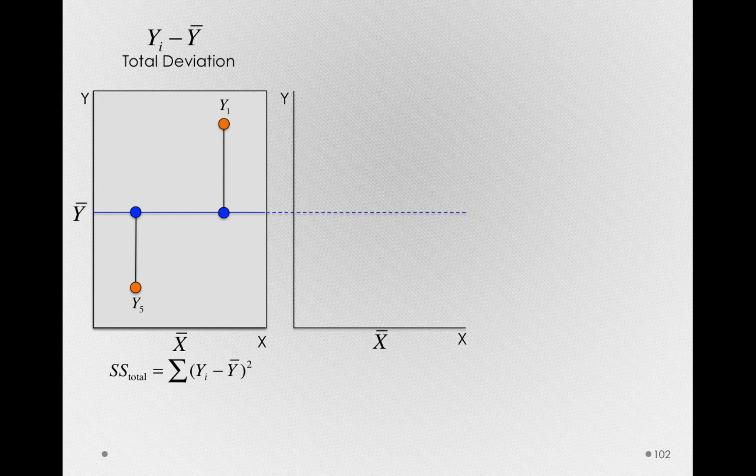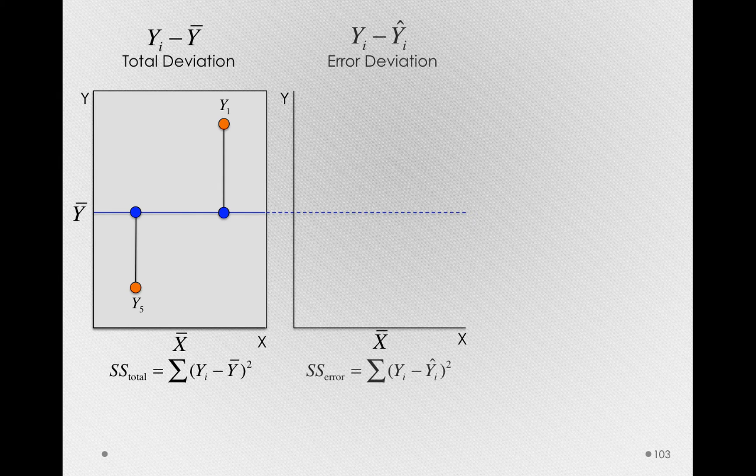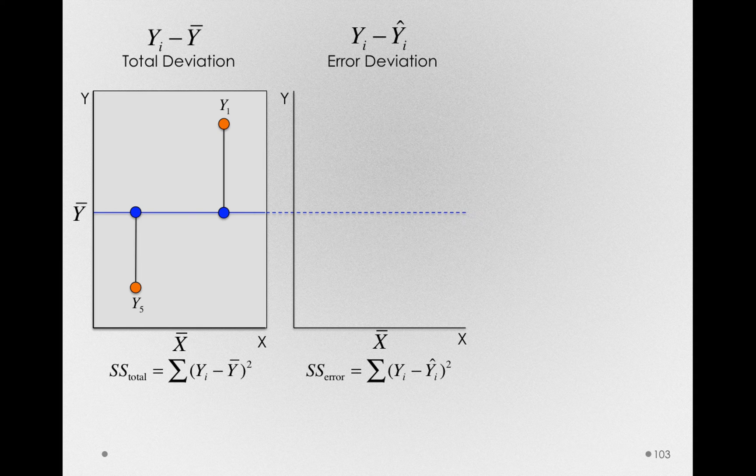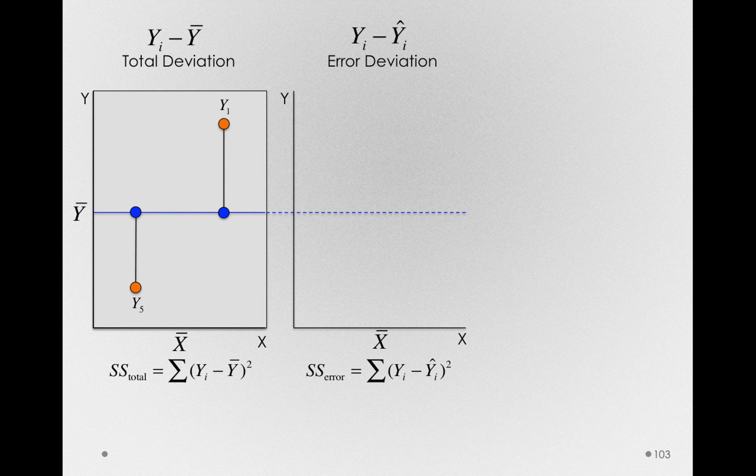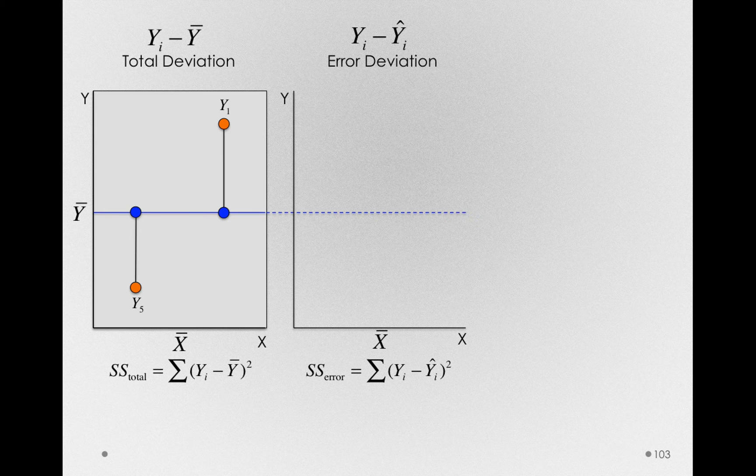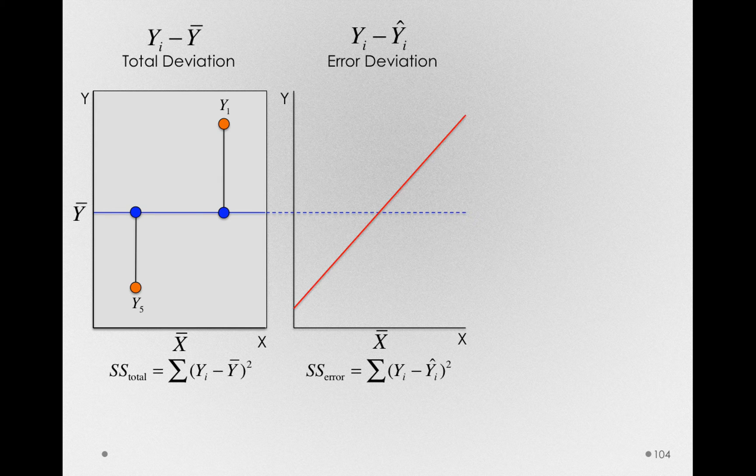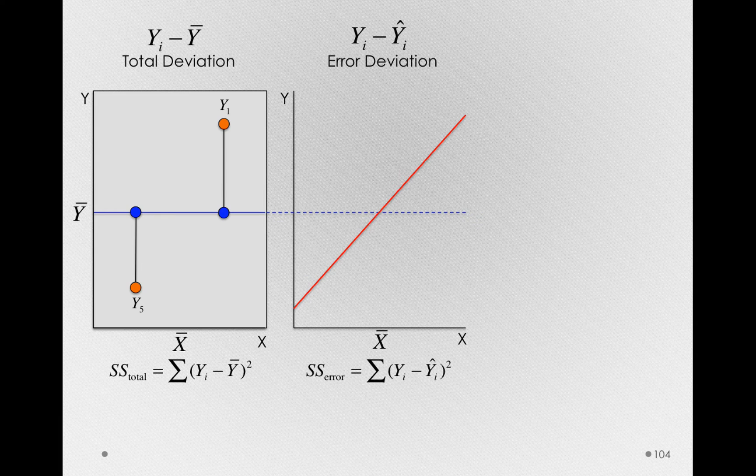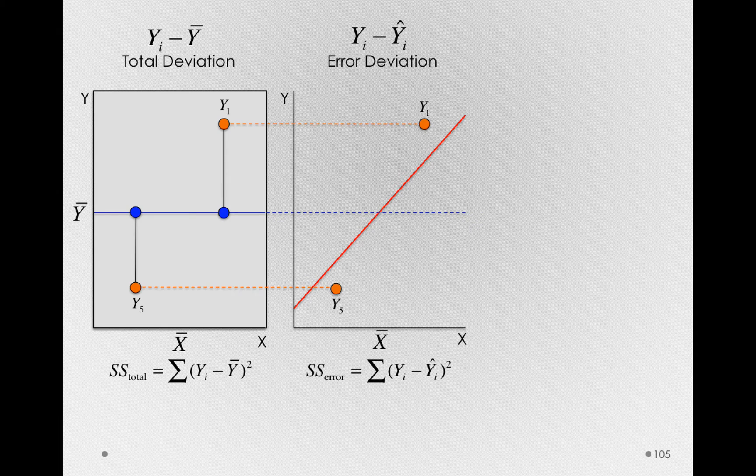Let me extend the y-bar axis across, and let's next consider the error deviation. That is, the difference between these individuals' actual y-scores and what is predicted for them on the basis of our model. So let me actually bring the model in. Here was the linear regression line. And let me extend across y1 and y5.